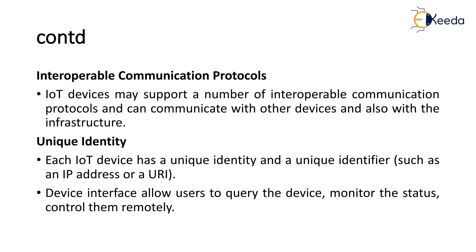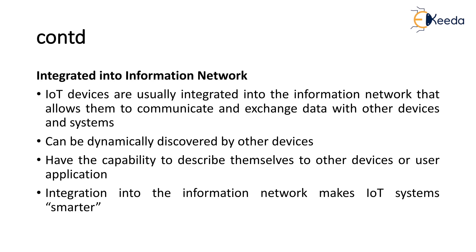Next is unique identity. Each IoT device has a unique identity and a unique identifier, such as a unique IP address or URL. An IoT device which sends data to the cloud has an API — application-specific peripheral interface — which may be unique for each IoT application. IoT systems may have intelligent interfaces which adapt based on context and allow communicating with users and the environmental context, allowing users to query the device, monitor its status, and control it remotely.